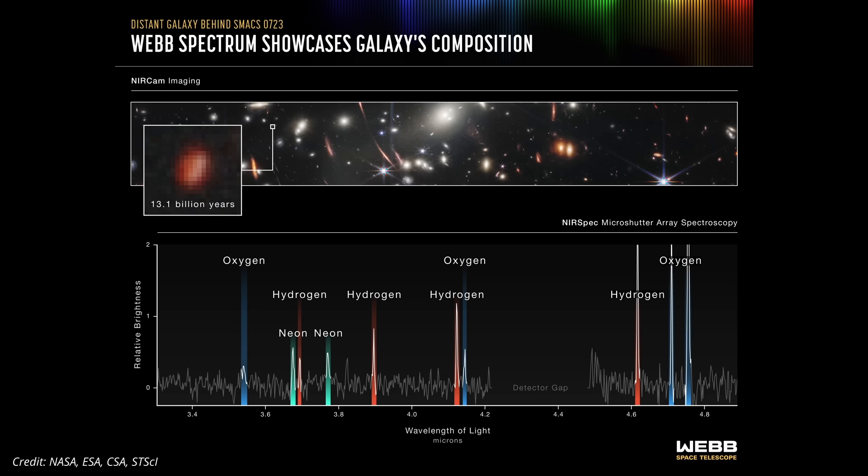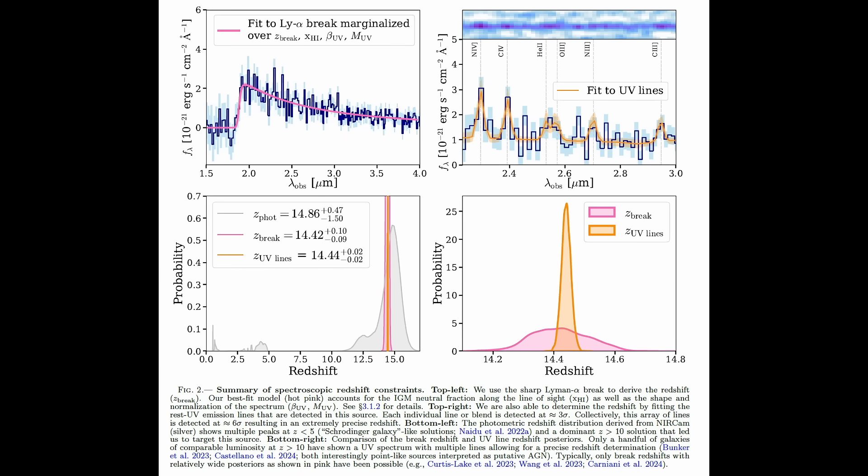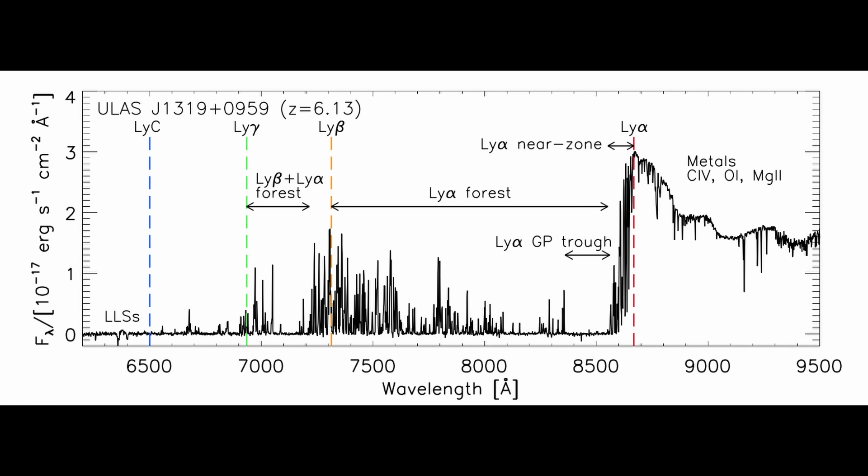The gold standard is spectroscopy. Spread a galaxy's light into a spectrum and you see not just the break itself, but all the fine structure around it: the forest of absorption lines, the damping wings, the gradual ramp from neutral to ionized gas. That's how MOMZ-14 was nailed down at a redshift of 14.4. In principle, spectroscopy lets us watch re-ionization unfold.